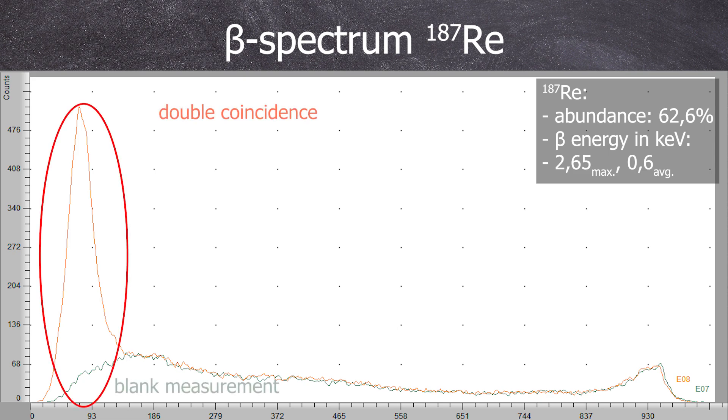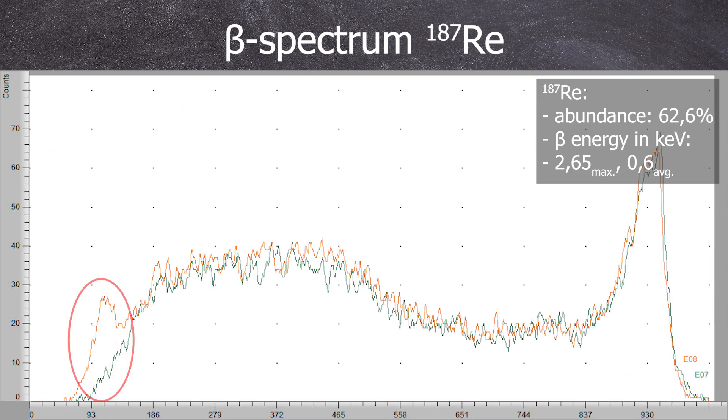The orange signal represents double coincidences along with the blank measurements. Now, I'll compare this with the triple coincidences and this small difference in the triple coincidences from the background. This is our rhenium-187.